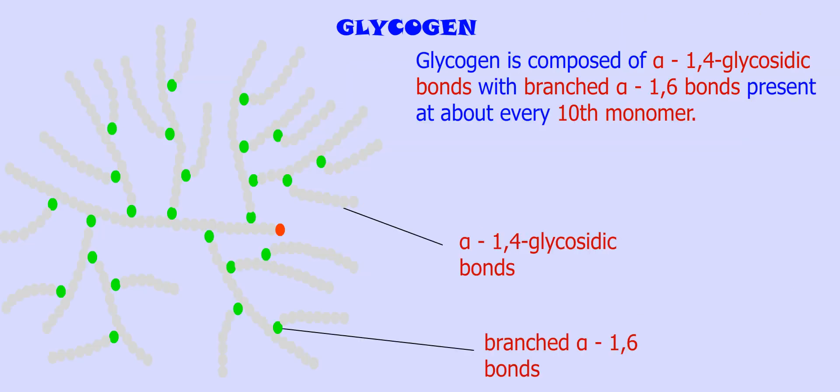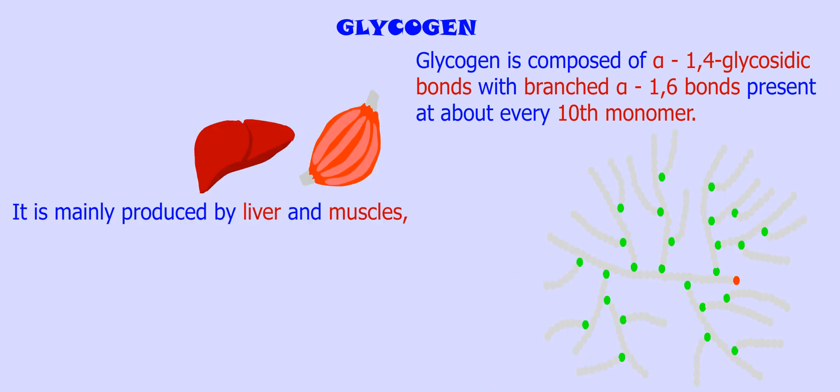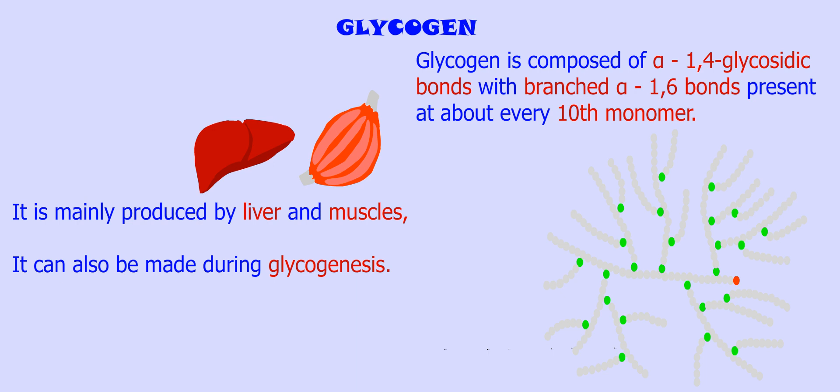Glycogen is composed of alpha-1,4 glycosidic bonds with branched alpha-1,6 bonds present at about every 10th monomer. It is mainly produced by the liver and muscles, but it can also be made during a process called glycogenesis.